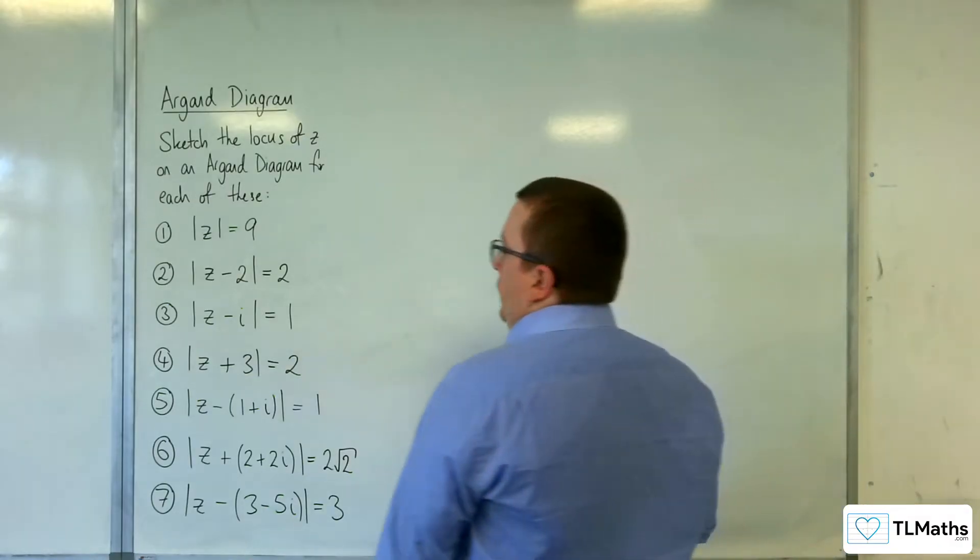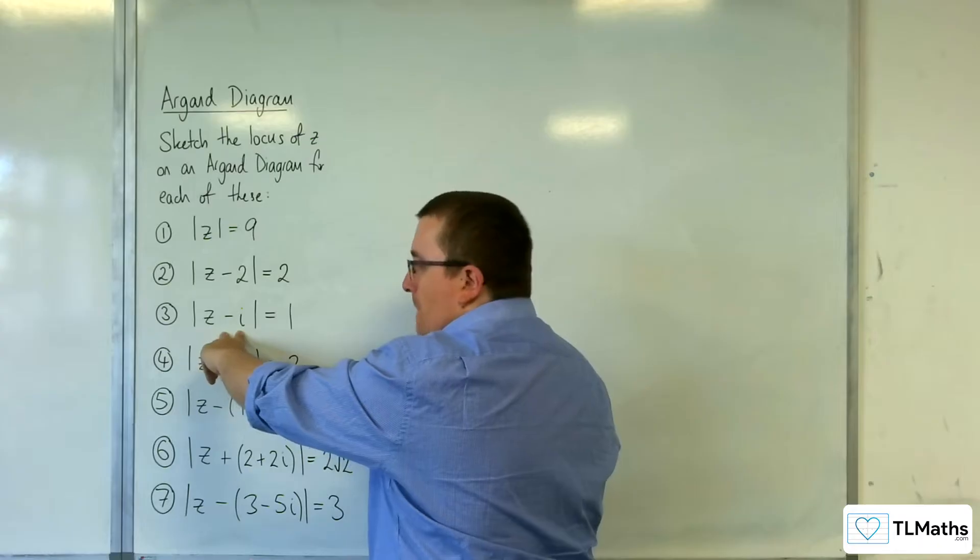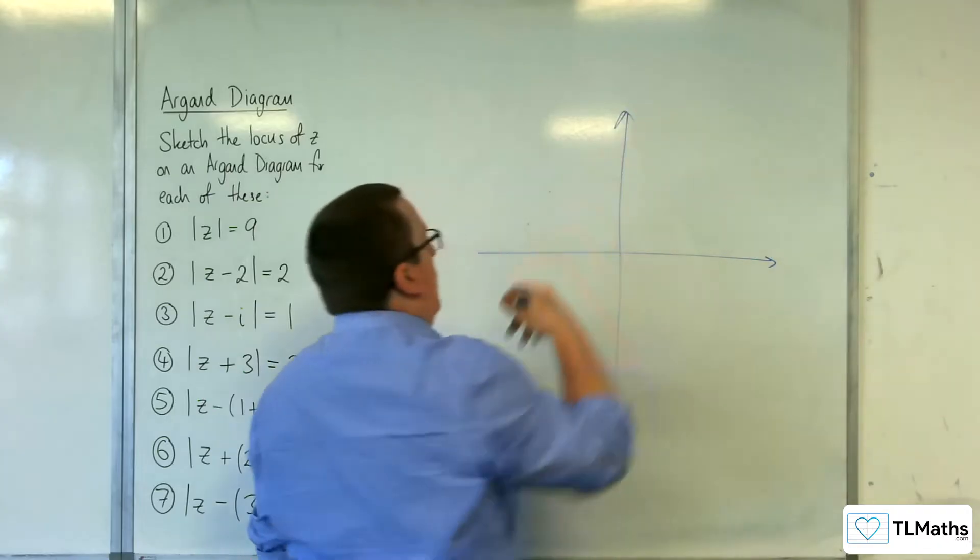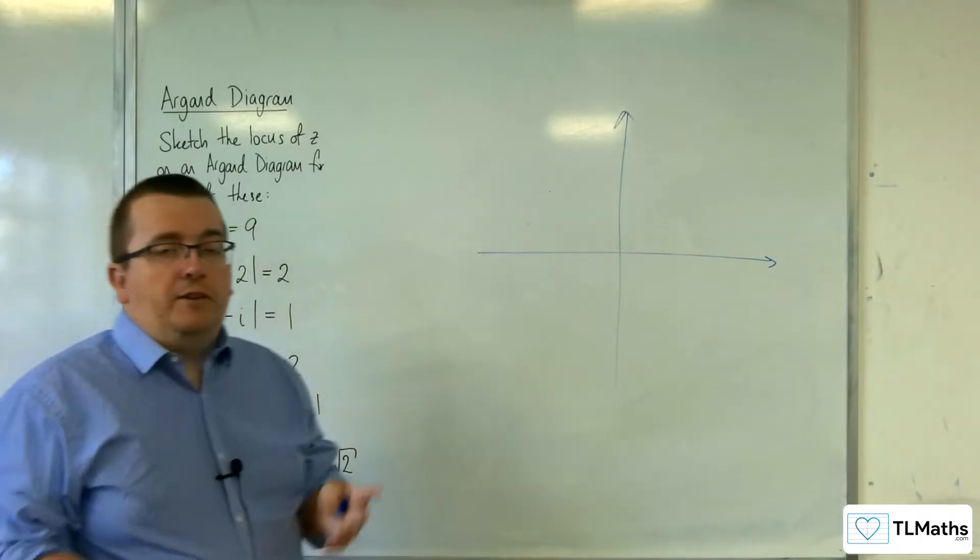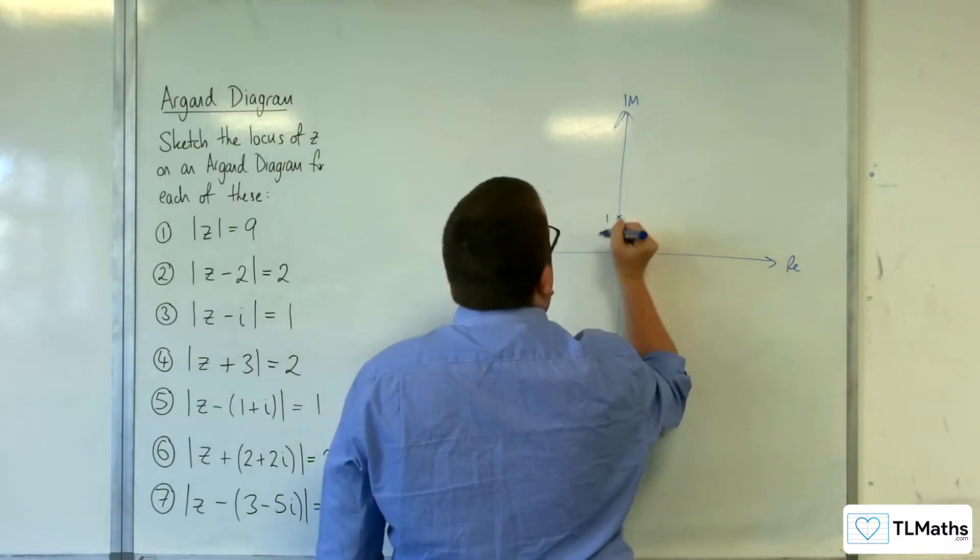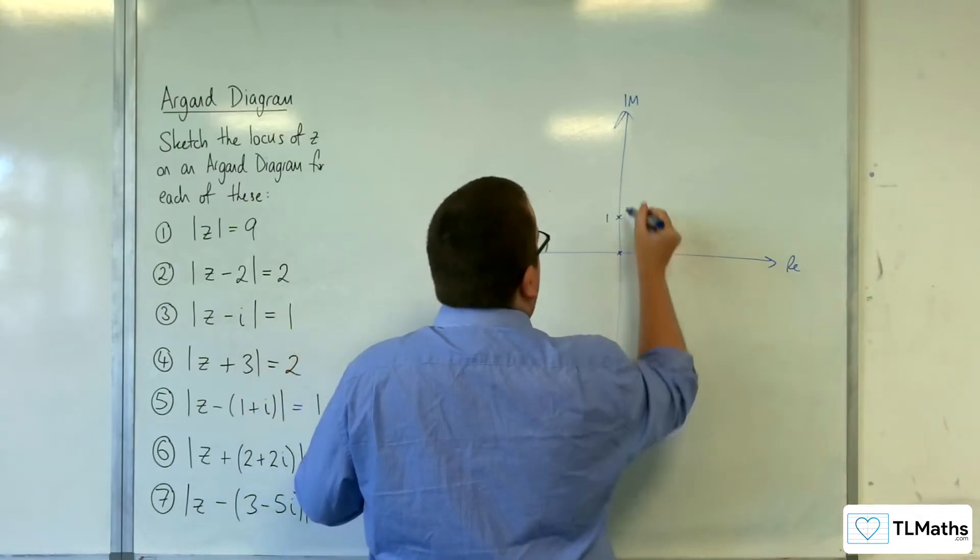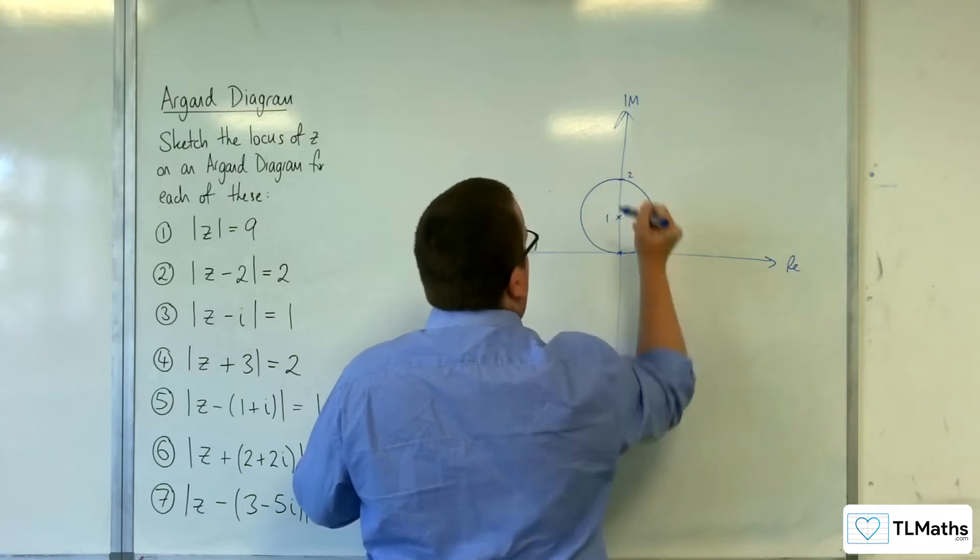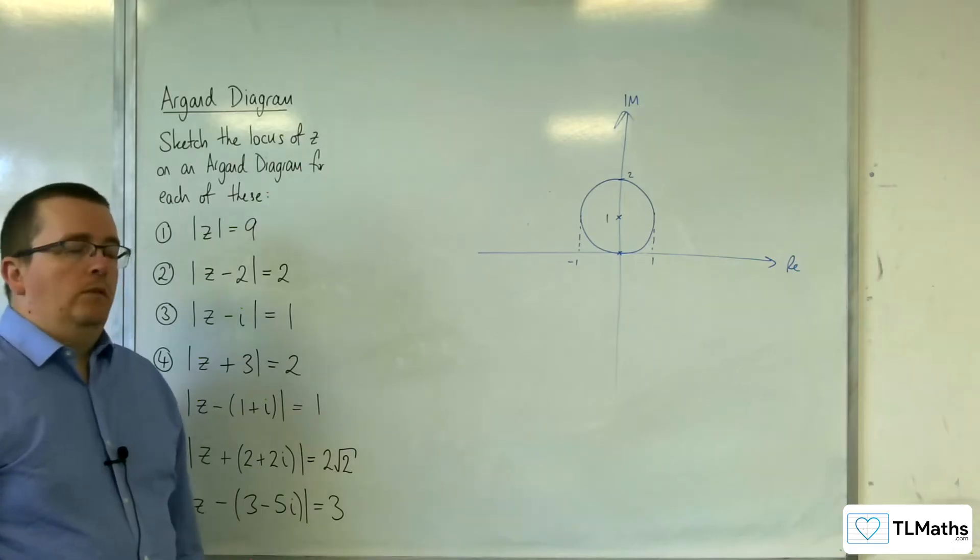Number 3. So this one is not centred at the origin. Because you've got the minus i there, it's going to be centred at 1 on the imaginary axis. Just think about where i is on the Argand diagram. If you were just going to sketch z equals i as a point, where would that be? It would be there, at 1 on the imaginary axis. It's got a radius of 1, so it goes through the origin. That would be 2, that would be minus 1, and that would be 1.